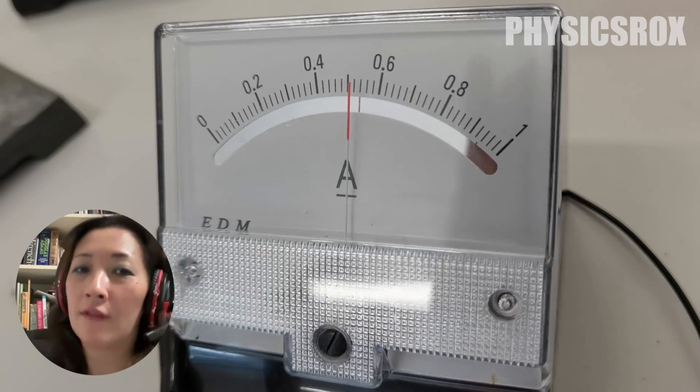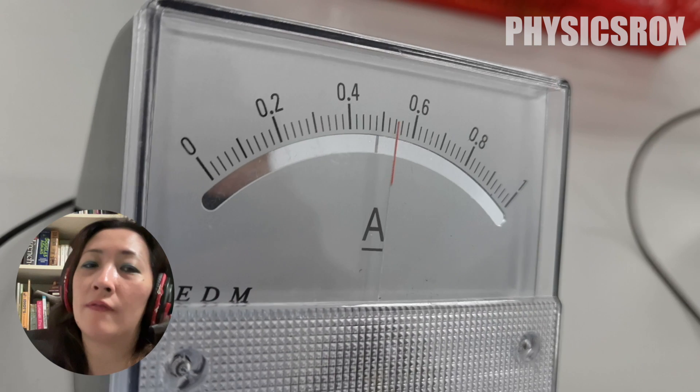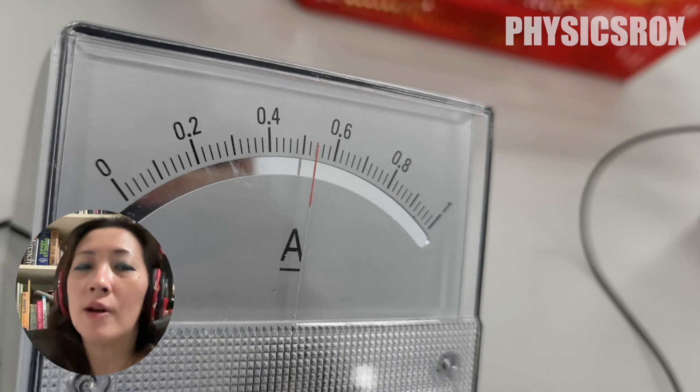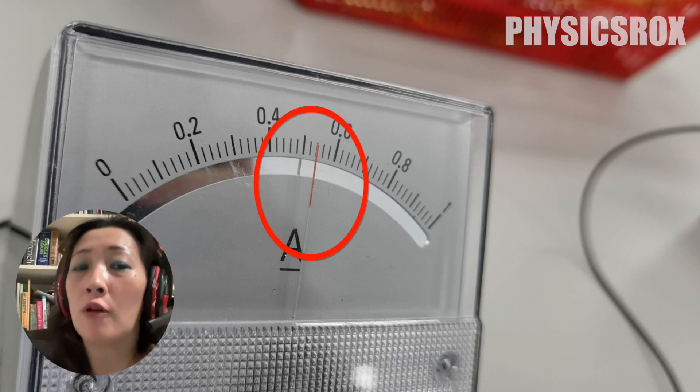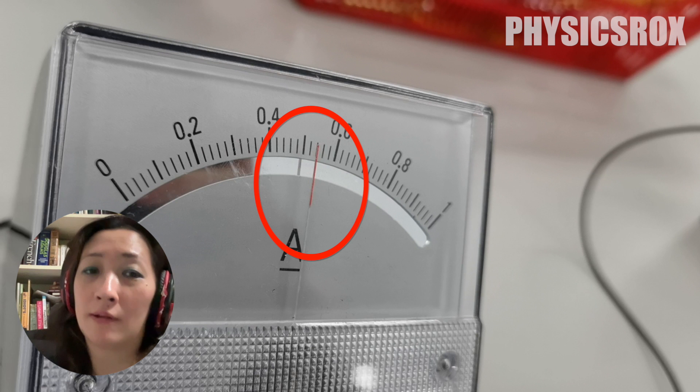Whereas if you were to look at the scale from this angle, again, we're not looking at the scale at a right angle. This is clearly evidenced by the needle not overlapping its own reflection in the anti-parallax mirror.